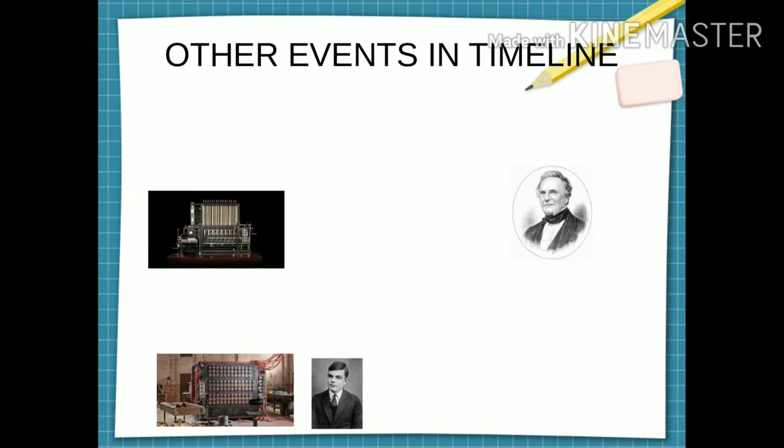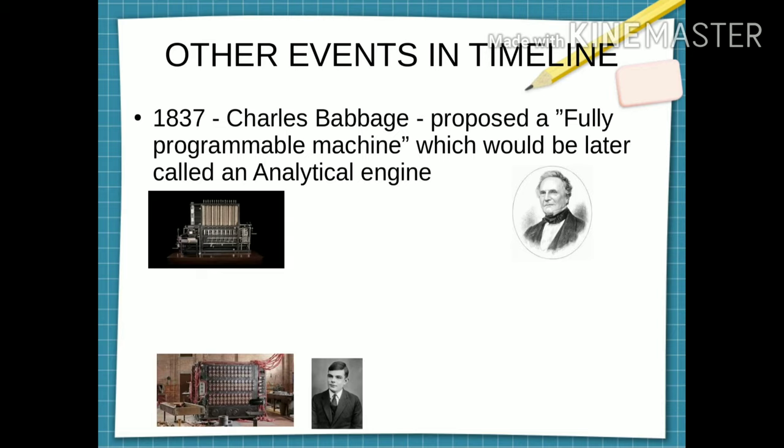After that, there are other events in timeline. Just to refer, in 1837, Charles Babbage proposed a fully programmable machine, which would be later called an analytic engine. You know that what is that analytic engine, later called computer. It happened in 1837. Remember, Thomas Salva Edison talked about that in 1883. Edison effect in 1883. This is in 1837.